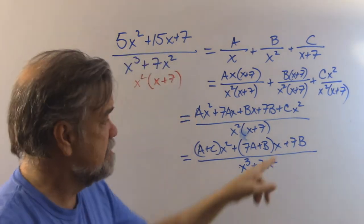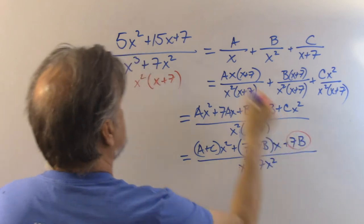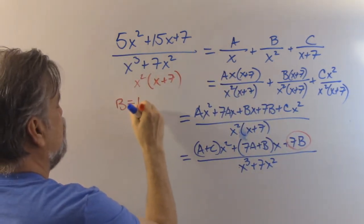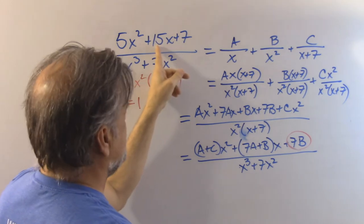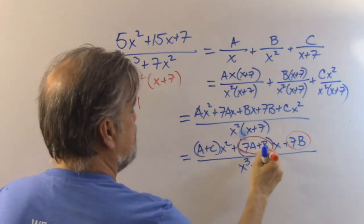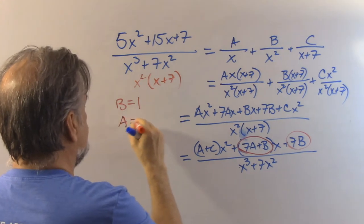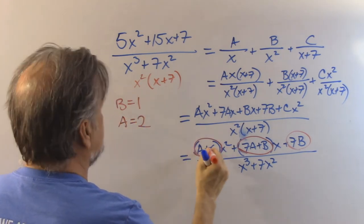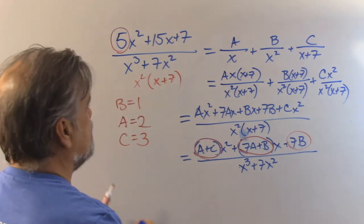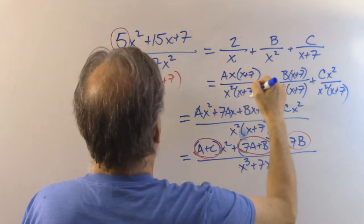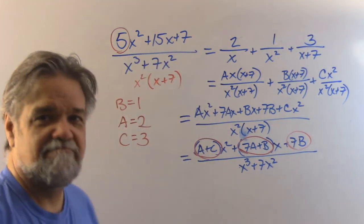Now we compare this to the original problem. So 7b equals 7, meaning b equals 1. Then 7a plus b equals 15, and since b is 1, we get 7a equals 14, so a equals 2. And a plus c has to equal 5, and if a is 2, then c must be 3. So this equals 2 over x plus 1 over x squared plus 3 over x plus 7. That worked out pretty well.